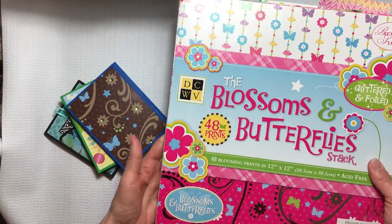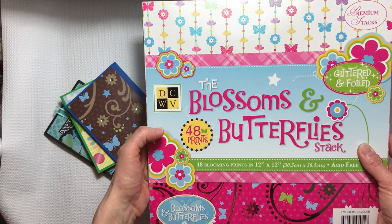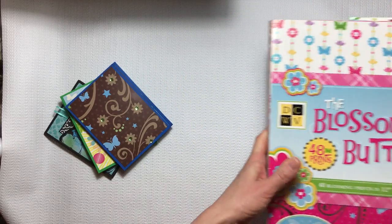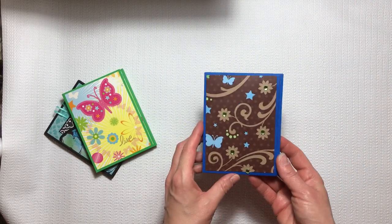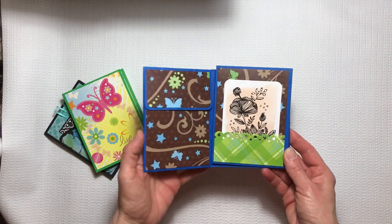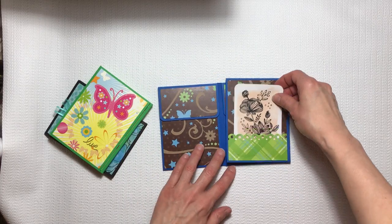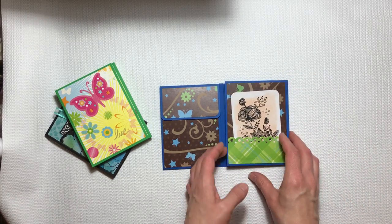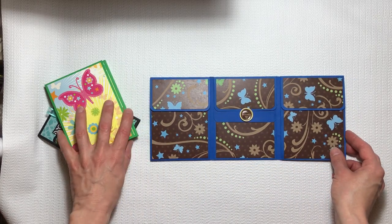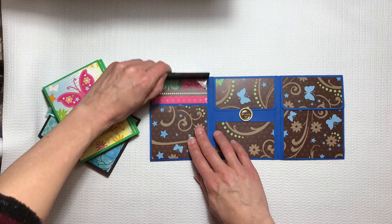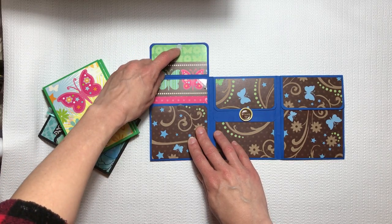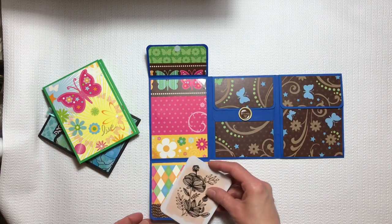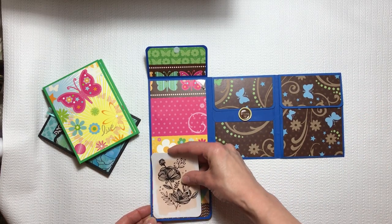This is it. I ended up making two because it takes only an hour to make. I used the Blossoms and Butterflies stack by DCWV and I love this because it has glitter and foil in it. Here's the first one that I made. This card is Becky Higgins Project Life. I just used velcro and then I added some photo corners so that the person receiving it could just flip their little photos right in there.